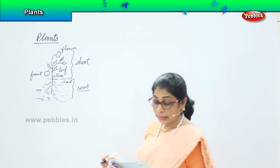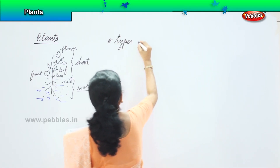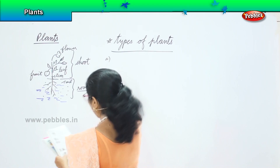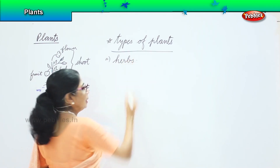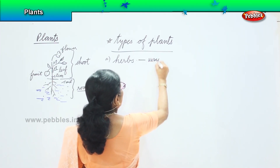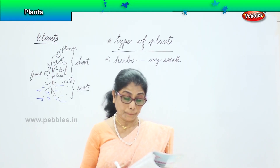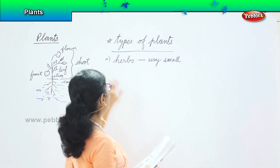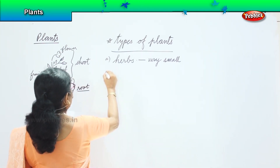When we talk about plants, there are different types. First, we have herbs. Herbs are very small plants with soft stems, and some of them have medicinal value as well. Examples of herbs are mint, tulsi, coriander, etc.